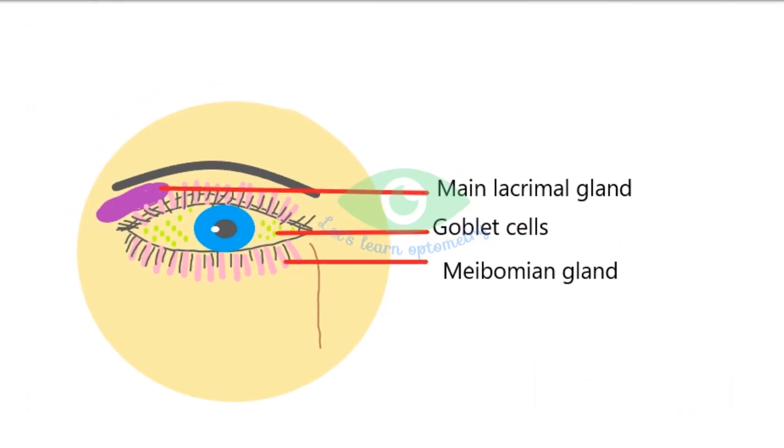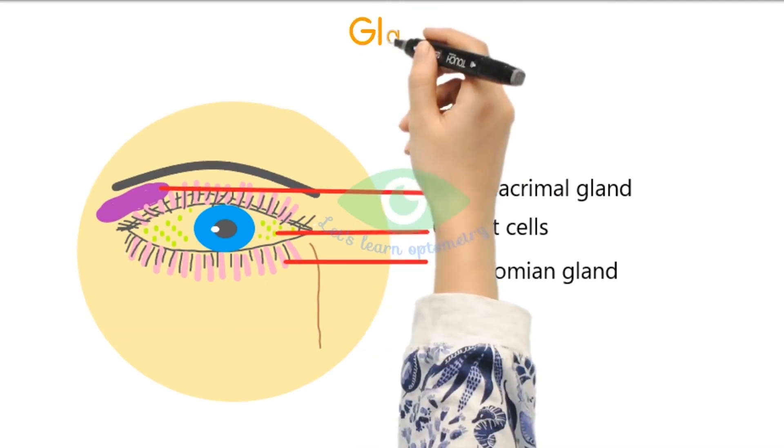This is a picture showing the main lacrimal gland near the eyebrows, the Meibomian gland in the upper and lower lids, and the goblet cells in the conjunctiva.